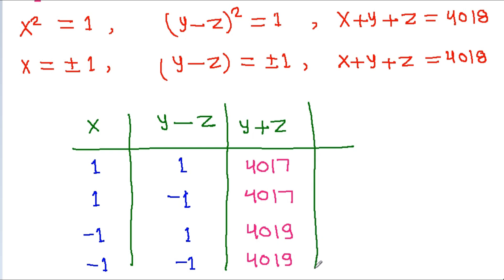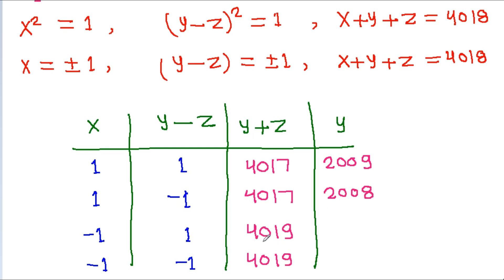To find y, we add (y - z) and (y + z) then divide by 2. For case 1: (4017 + 1)/2 = 4018/2 = 2009. For case 2: (4017 - 1)/2 = 4016/2 = 2008. For case 3: (4019 + 1)/2 = 4020/2 = 2010. For case 4: (4019 - 1)/2 = 4018/2 = 2009.